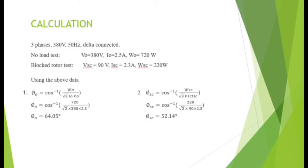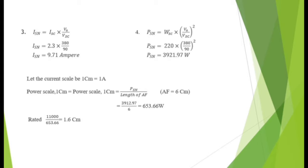From the no-load test: no-load voltage = 380 V, no-load current = 0.5 A, no-load power = 721 W. From the blocked rotor test: short circuit voltage = 90 V, short circuit current = 0.3 A, short circuit power = 120 W. From this data, calculate angle φ₀ and angle φ_sc, then the short circuit current at normal voltage (I_sn) and power at normal voltage (P_sn) using the given formulas. A drawing scale is then chosen: 1 cm = 1 A, and the power scale was calculated as 1 cm = 635.66 W, with no-load power = 720 W.